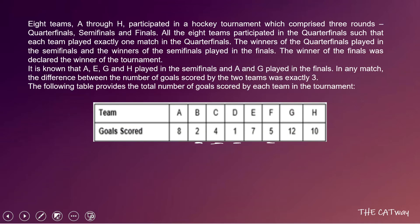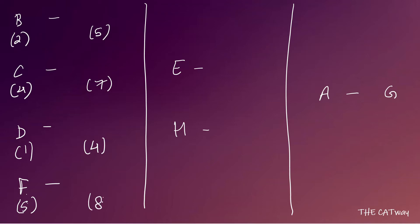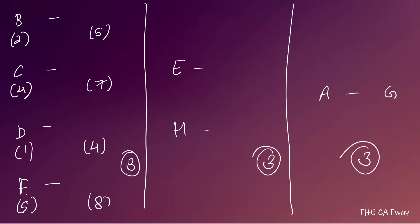Since the difference between goals in any match is exactly three, and all four of these teams lost, their opponents scored their goals plus three. So the opponent of B scored 5, C's opponent scored 7, D's opponent scored 4, and F's opponent scored 8. Also, the minimum number of goals required to win any round is three.